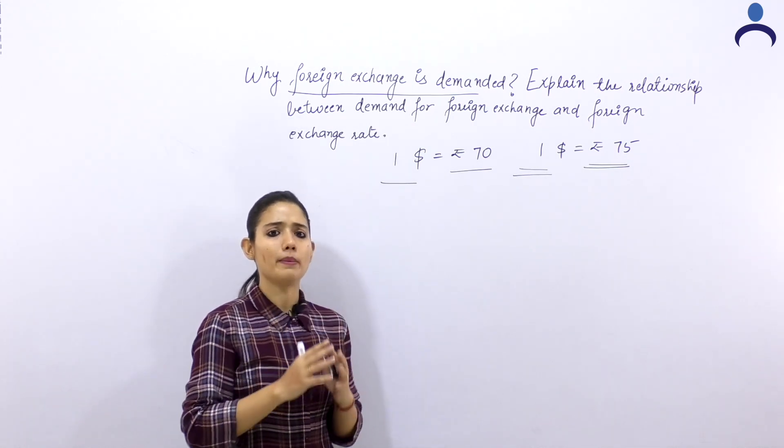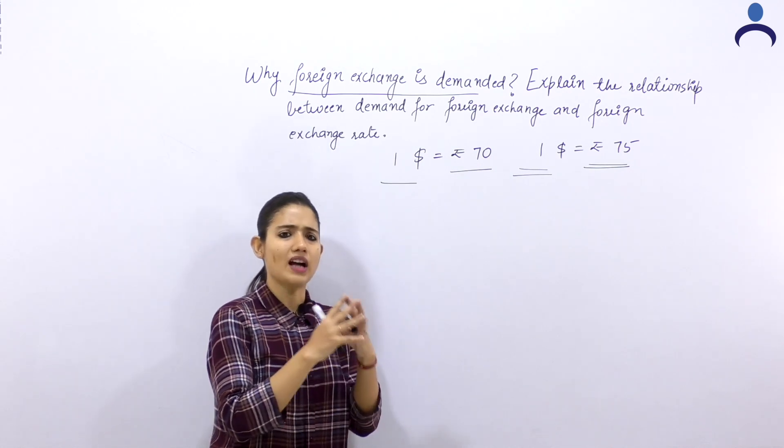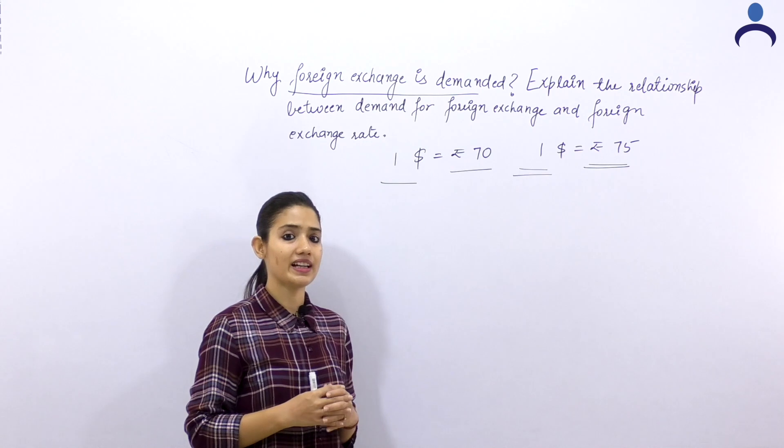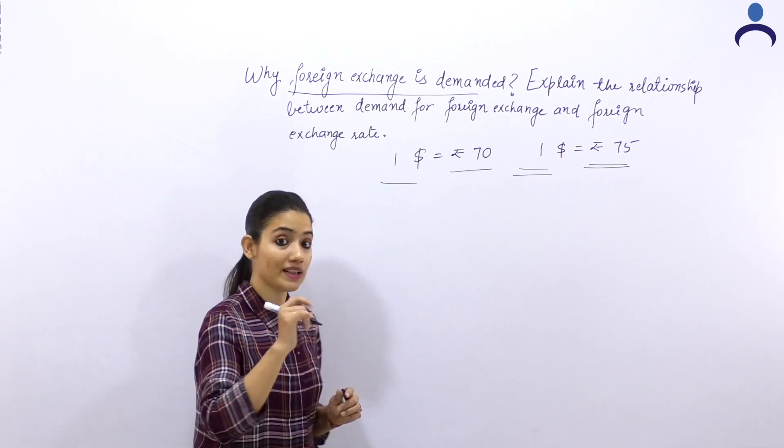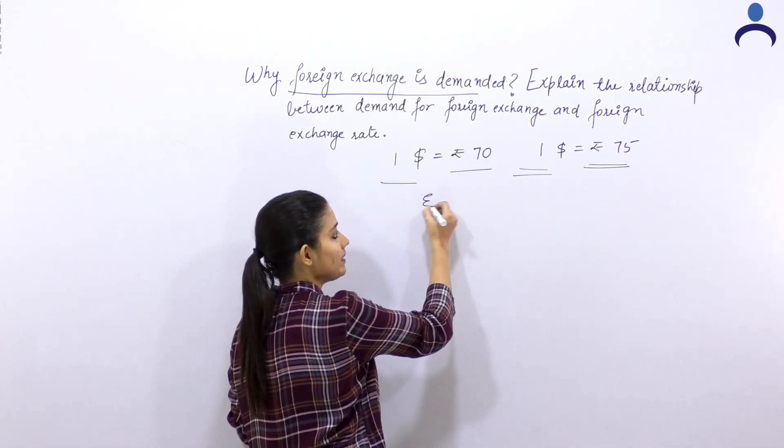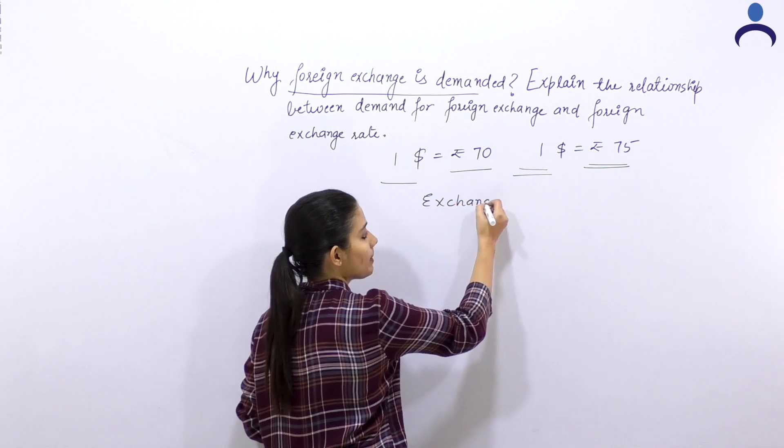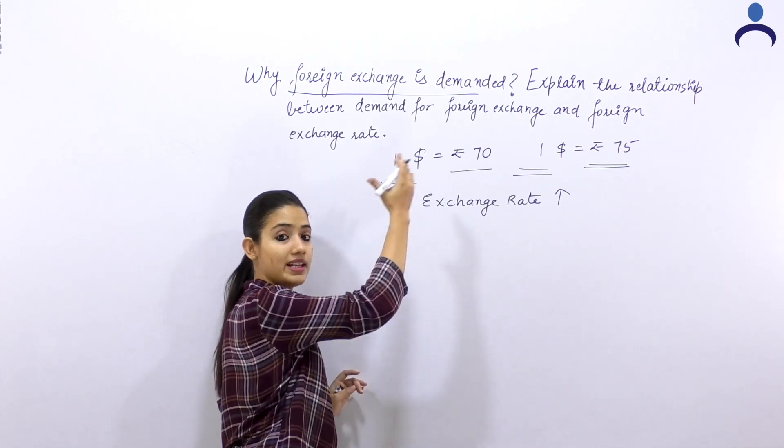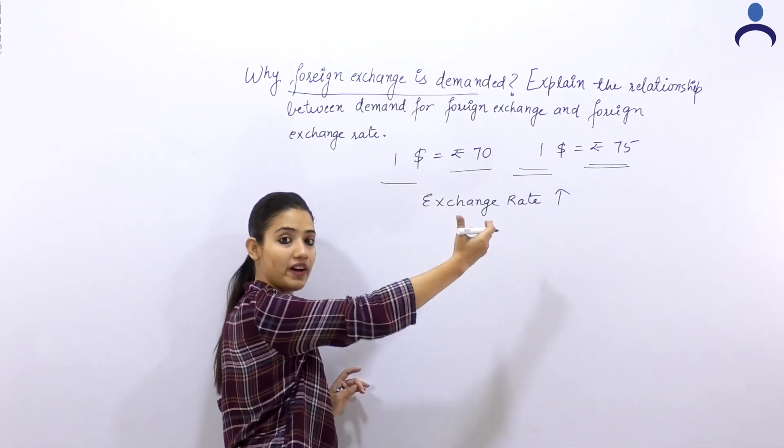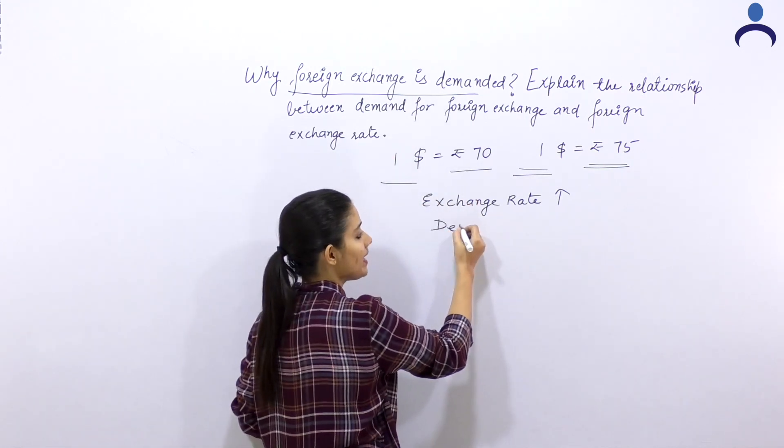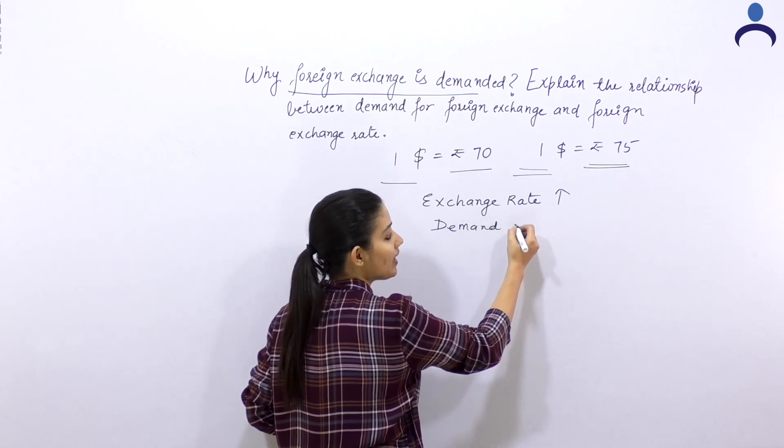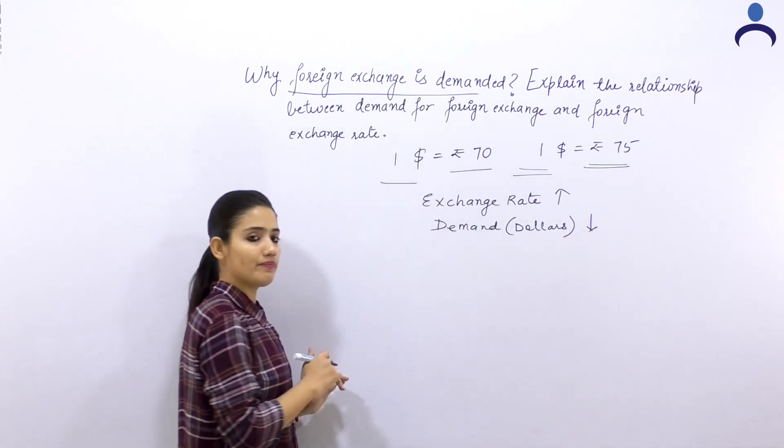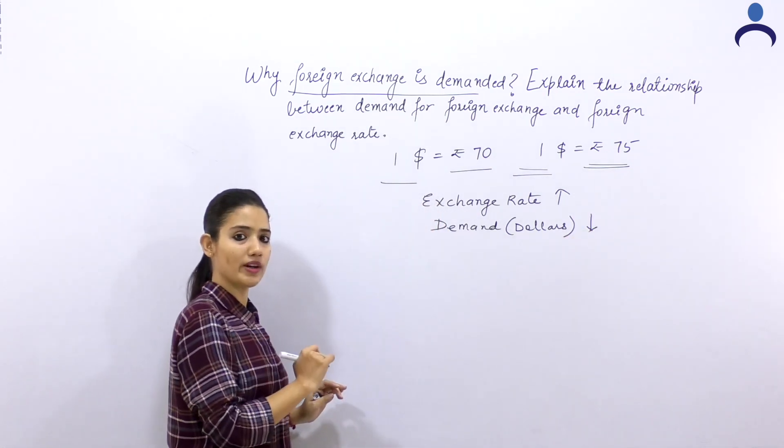For the same quantity that is $1. This means that you, being a consumer, will demand more dollars or less, will purchase more goods or less? This means that as we will make the diagram later, as the exchange rate has increased from 70 to 75, your demand for dollars is more or less?